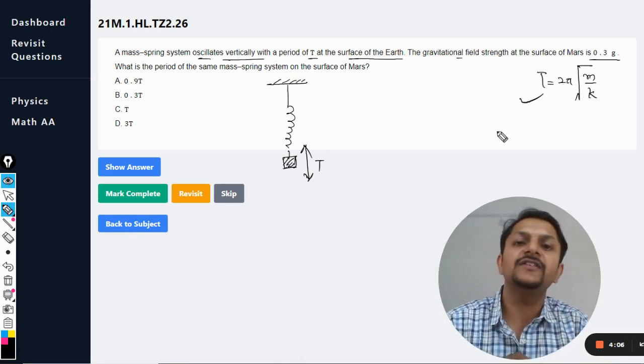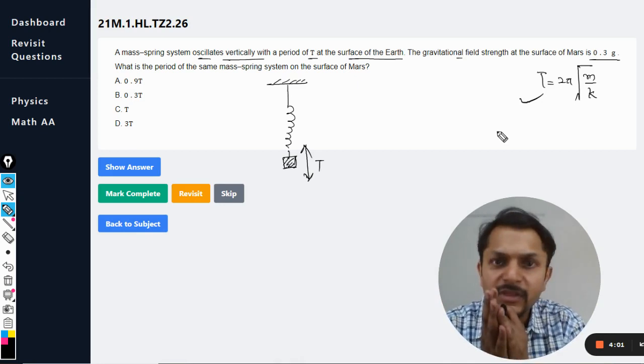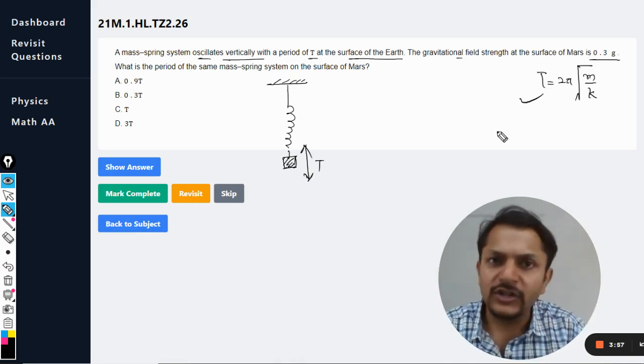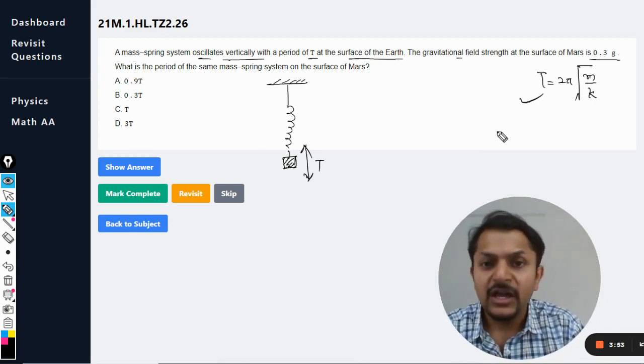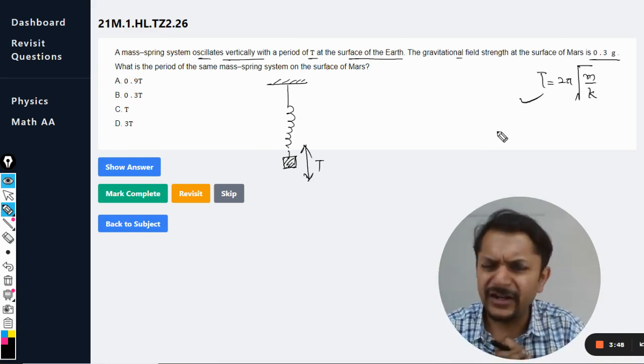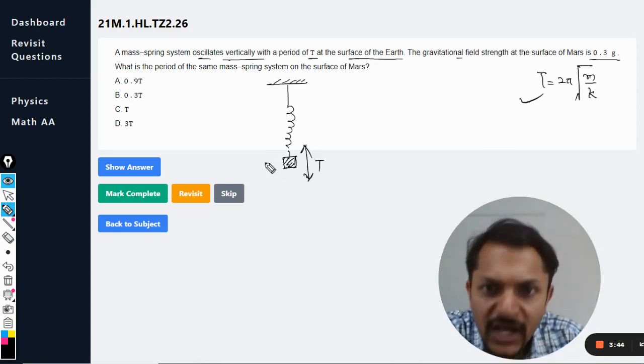It means whether you take the spring-mass system on moon, Mars, or Earth, the time period is not going to change. So as far as the horizontal spring is concerned, we are sure that the time period would be same. But now they have given the vertical spring, and now we have to think, is there any difference now? I believe there is no difference even then, but let us see.